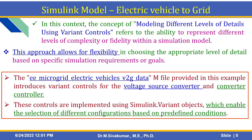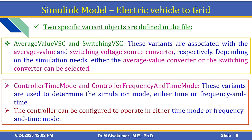Here, there are two script files. The first script file is an important one, called WE Microgrid Electrical Vehicles with digit data. This M-file provides, in this example, an introduction to variant controls for voltage source converter and converter controller. These controls are implemented using Simulink variant objects, which enable the selection of different configurations based on predefined conditions. Two specific variant objects are defined in the file.